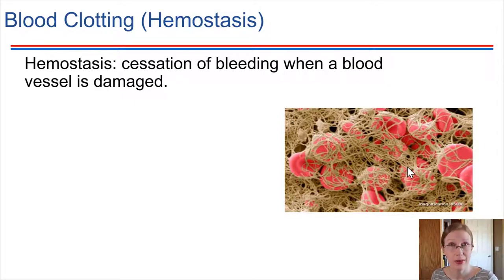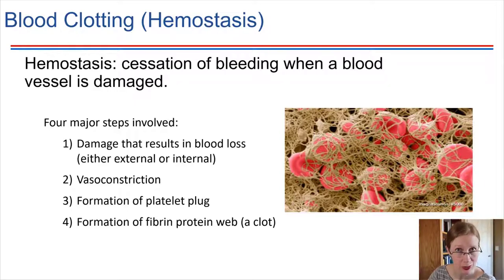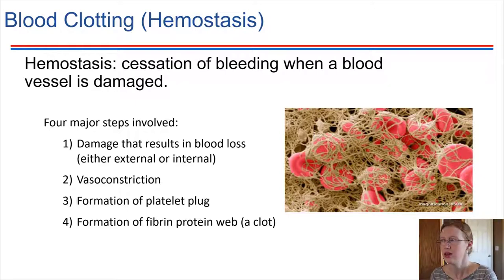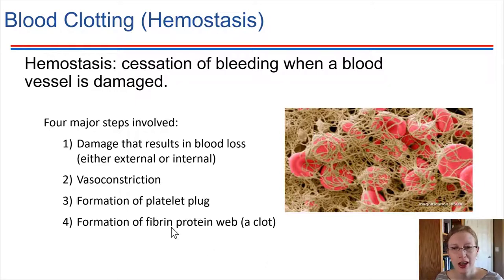The first step is that there has to be some type of damage — that damage is what initiates the whole process. After damage occurs, vasoconstriction happens. Platelets secrete serotonin, which causes vasoconstriction, reducing blood flow to the region. Then there is what's called a platelet plug, involving proteins present in the blood that work together to form a web of protein. Along with the platelets, that forms a clot which helps prevent blood loss from that region.